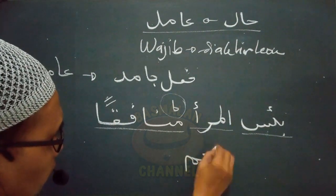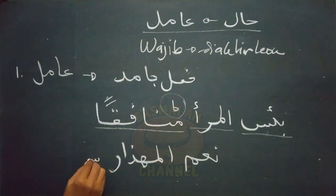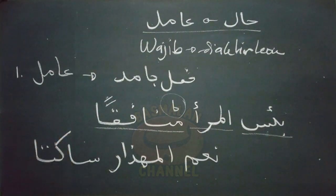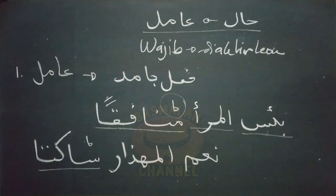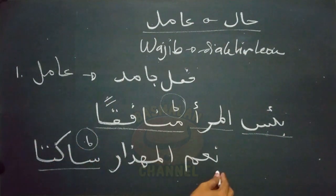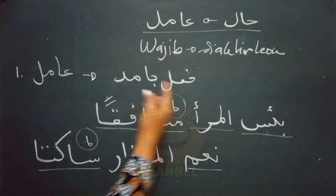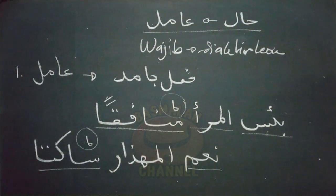Contoh lain seperti lafad 'ni'mal mihdha'ru sakitan': sebaik-baiknya orang yang mengigau, padahal dalam keadaan diam. Karena orang yang mengigau terus berbicara tanpa disadari, dan ketika dia diam maka hal tersebut merupakan sebuah kenikmatan. Lafad 'sakitan' kedudukannya sebagai hal, sementara amilnya adalah lafad 'ni'ma' yang merupakan fi'il jamid. Dalam hal ini hal tidak boleh mendahului amilnya. Tidak boleh dikatakan 'sakitan ni'mal mihdha'ru'.